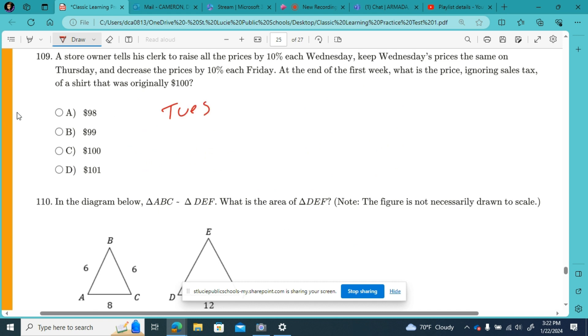So here it is Tuesday, shirt's $100. And on Wednesday, the price increases by 10%. So now that same shirt's $110. Thursday, it's the same. And Friday, we got a decrease by 10%. 10% of $110 is 11. So we got to subtract 11. So we're at $99. At the end of the first week, what is the price of a shirt that was originally $100? Well, now it's $99.